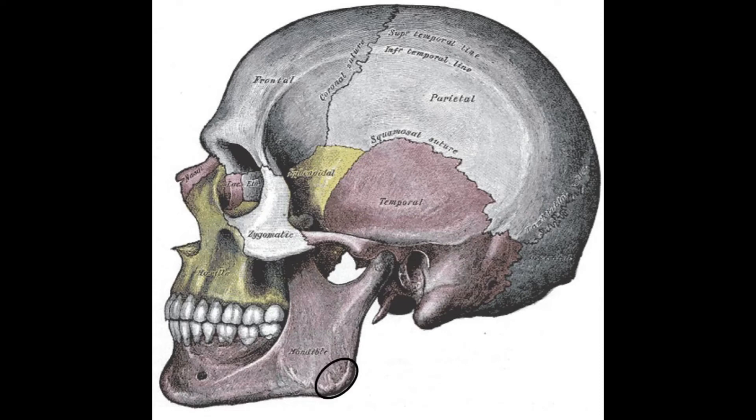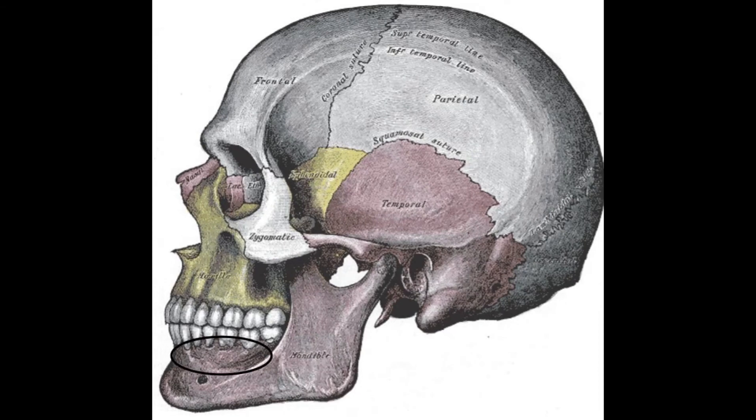This is the angle of the mandible — it's simply where parts of the bone change angles, so it's a very descriptive name. Parts of the masseter also attach in this area. This is the area of the alveolar processes of the mandible and the alveolar processes of the maxilla, which are the ridges that house the roots of the teeth.